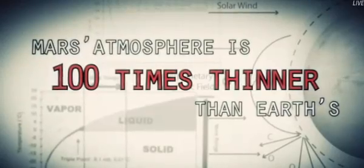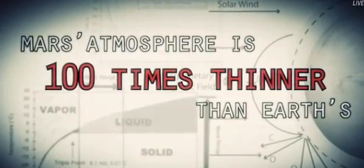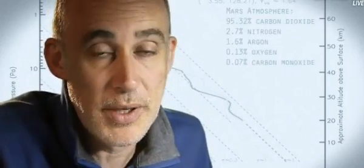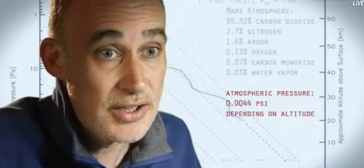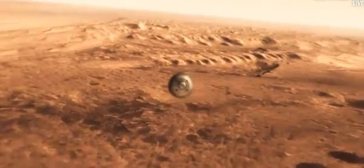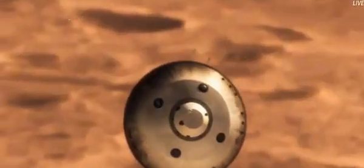Mars is actually really hard to slow down because it has just enough atmosphere that you have to deal with it, otherwise it will destroy your spacecraft. On the other hand, it doesn't have enough atmosphere to finish the job. We're still going about 1,000 miles an hour.